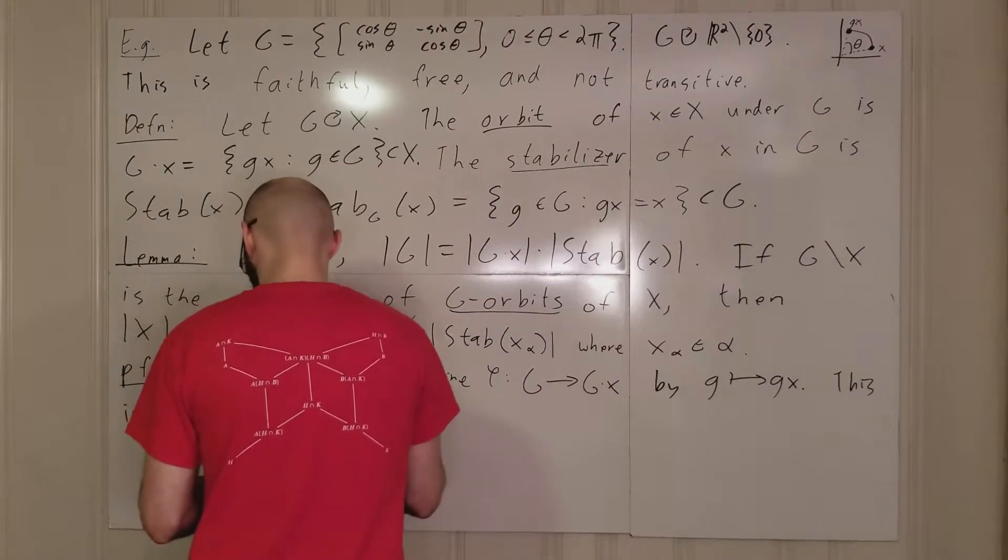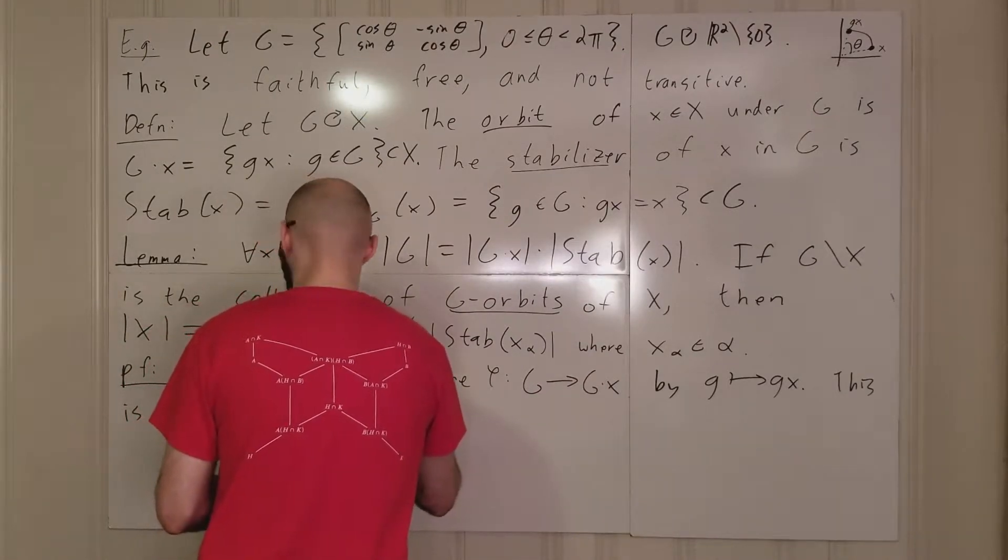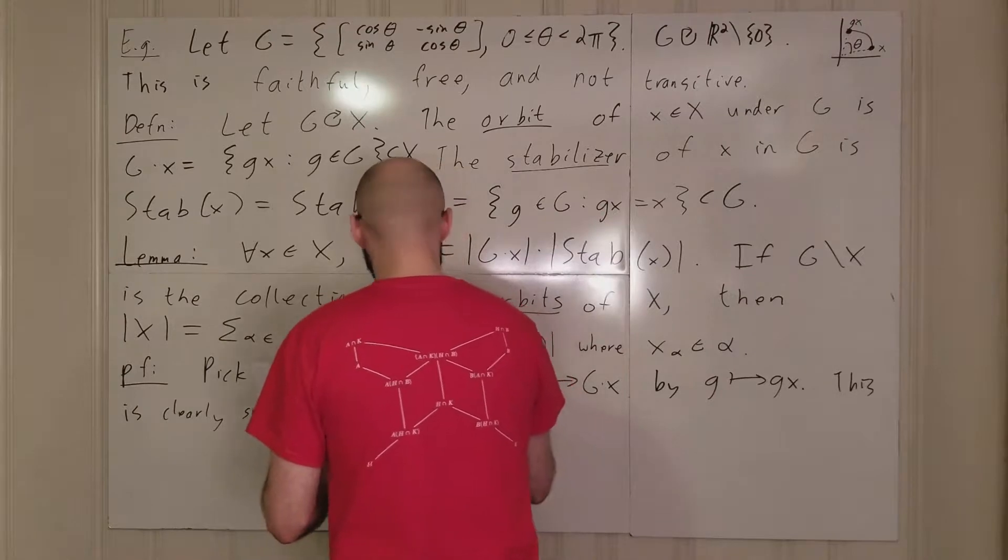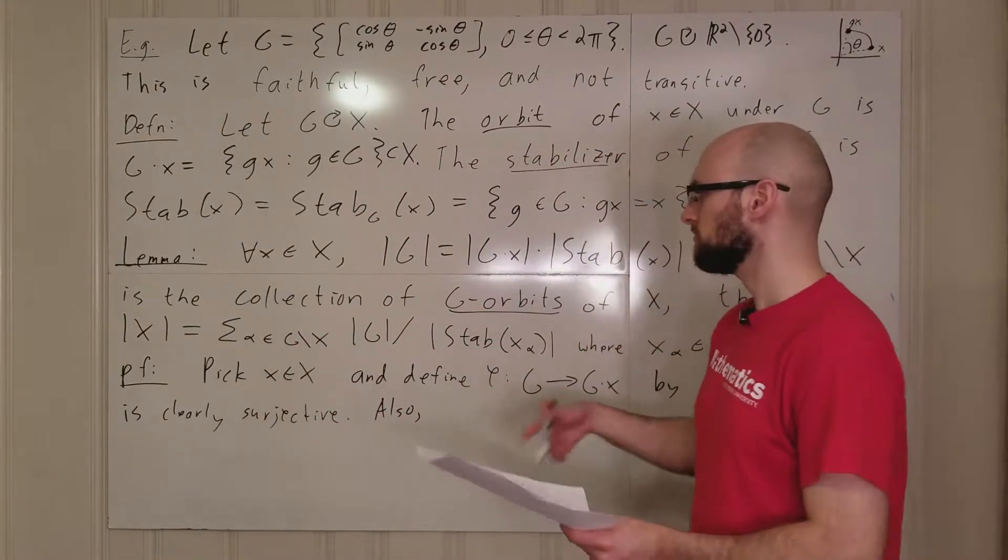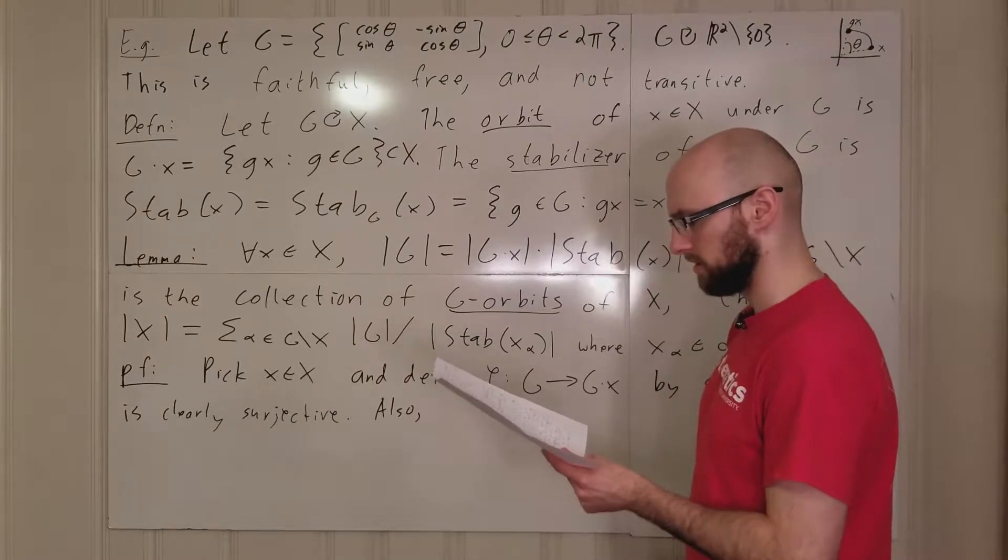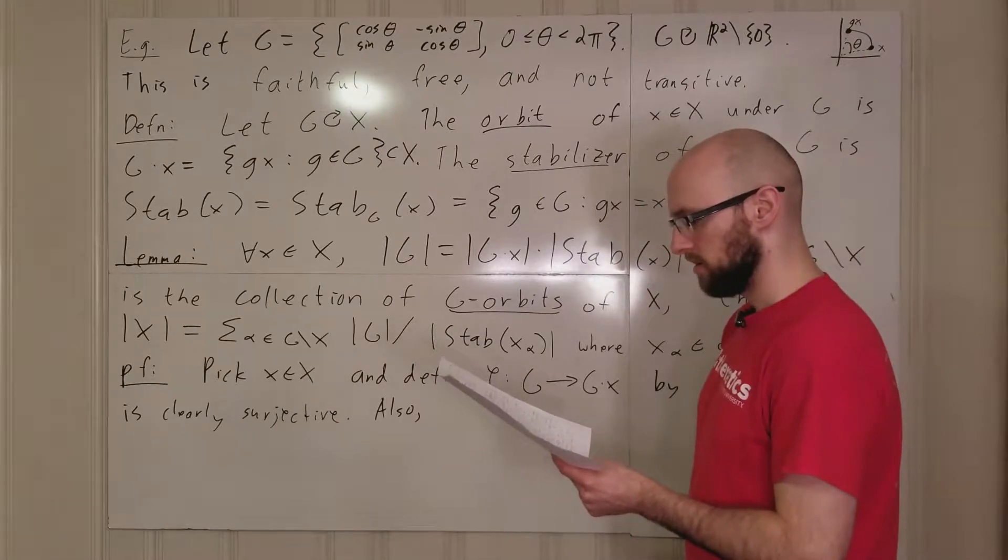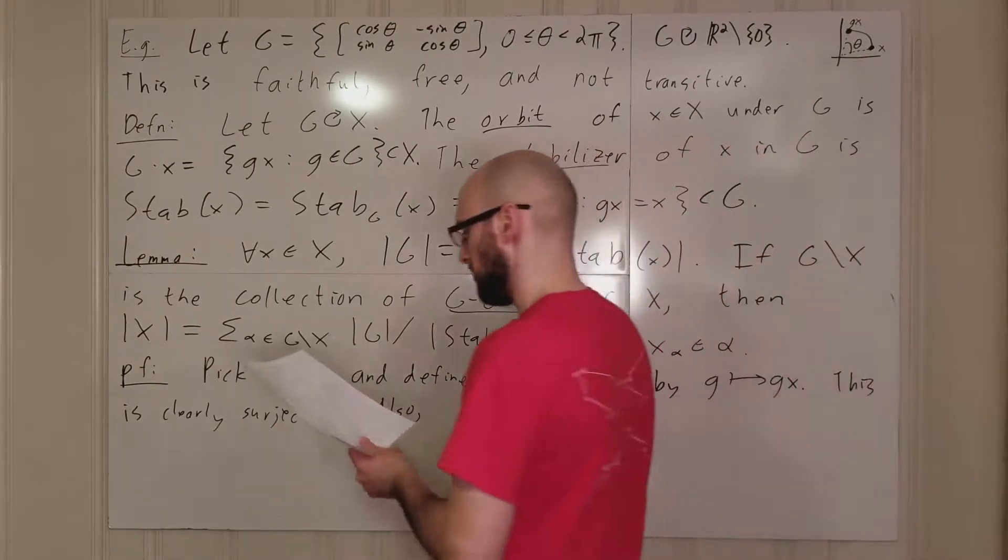Because we define the orbit of x as the things of this form. And so, just by definition, this map is surjective.